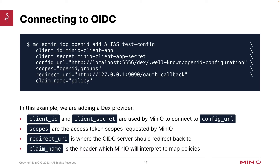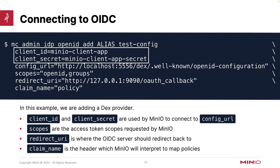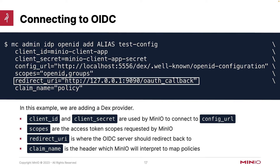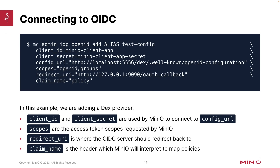Connecting this is a very simple command. What we're going to do is run MC admin IDP OpenID and add this configuration. We're going to use a client ID and a client secret to connect to this config URL — in this case we're using a DEX provider. We're going to request a couple of different scopes: the OpenID itself and any groups that the user is a member of, for group management. Then we redirect back to MinIO on the OAuth callback. I'm setting a claim name of 'policy' — that's the default — but if the policy is mapped to a different variable in my web token, I can map that differently using the claim name flag. That's how I would do this with OpenID Connect.